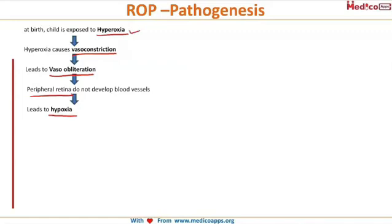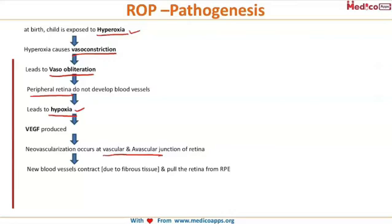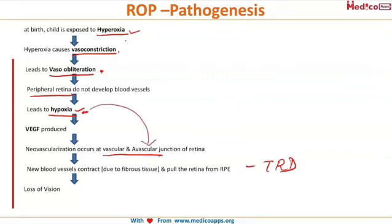This hyperoxia ultimately leads to hypoxia. Hypoxia results in the release of vascular endothelial growth factors (VEGF), causing neovascularization at the junction of the vascular and avascular retina. These new blood vessels contain fibrous tissue, contract, and pull the retina away from the retinal pigment epithelium, causing a tractional retinal detachment and finally resulting in loss of vision. In summary: hyperoxia → vasoconstriction and obliteration → peripheral hypoxia → neovascularization → tractional detachment and blindness.